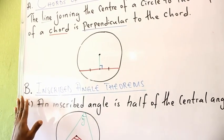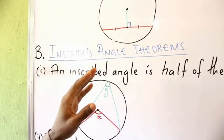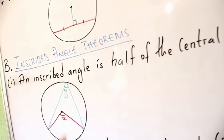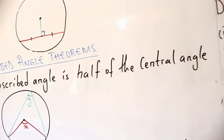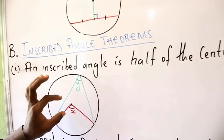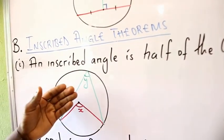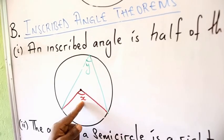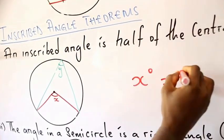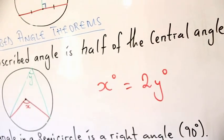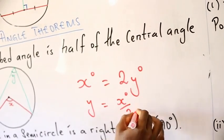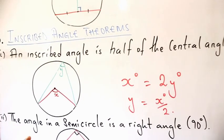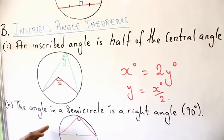We move on to the second topic — inscribed angle theorems. The first inscribed angle theorem states that an inscribed angle is half of the central angle. The angle at the center of a circle is always twice the angle at the circumference. So if the central angle is x, then the inscribed angle is y = x/2, and likewise x = 2y. Please take note of this theorem — it is very important.